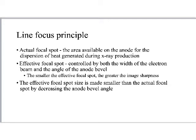What gets a little bit confusing is that when we're talking about this as technologists and adjusting focal spot size, what we're really talking about changing is the effective focal spot size. That effective focal spot size is produced by giving the anode an angle. The effective focal spot size is controlled by both the width of the electron beam and the angle of the anode bevel. As a general rule of thumb, as we decrease the effective focal spot size, we will increase image sharpness. We'll decrease that effective focal spot size by decreasing the anode bevel angle.